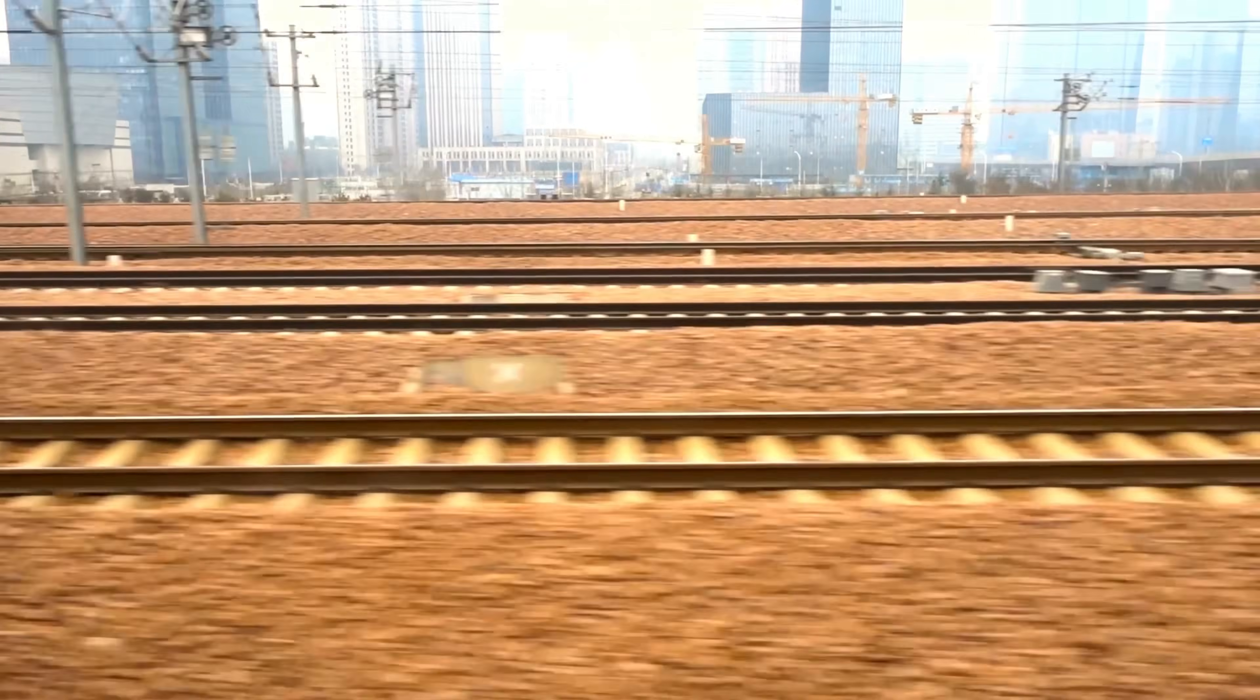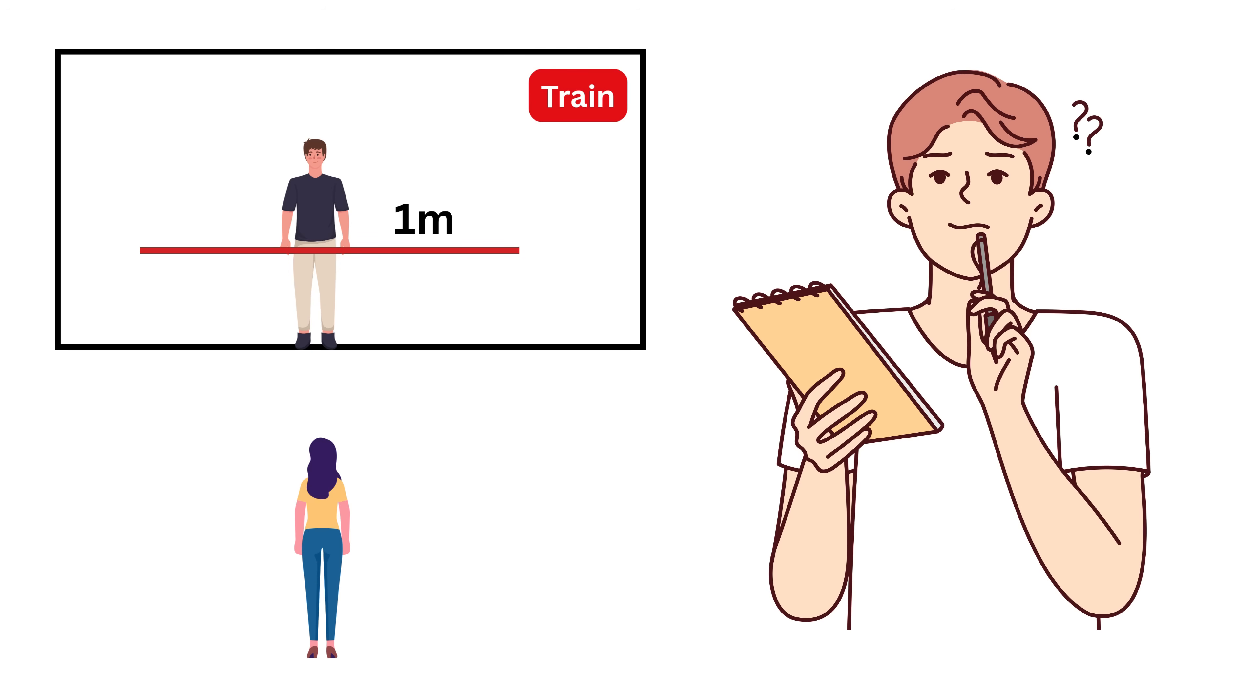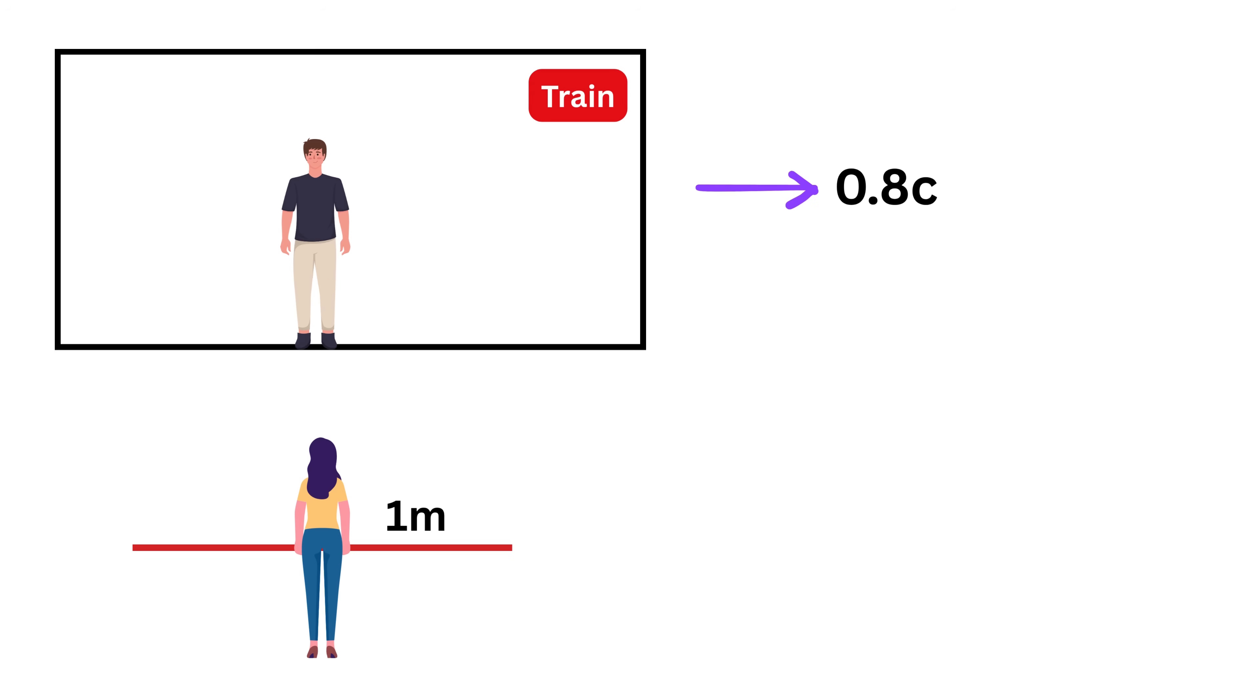At everyday speeds, this effect is too tiny to notice. Now here's a question for you: if the same one meter pole is instead held by Alice and is at rest in her frame, and Bob moves past her at the same high speed, what length will Bob measure for that pole in his moving frame?